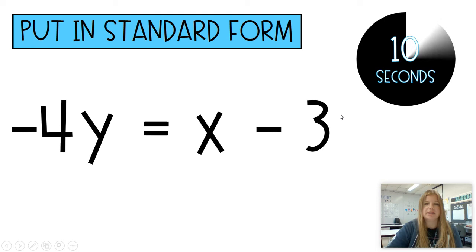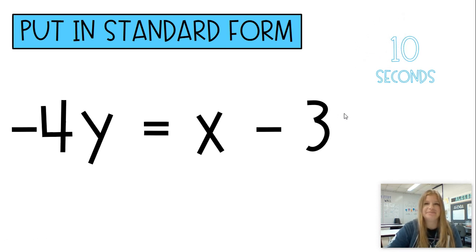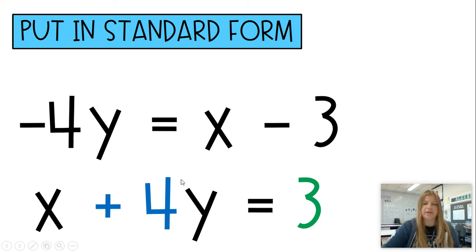Negative 4Y equals X minus 3. This can be done in just one step. Actually, 2. So for this one, you would have possibly added 4Y and then added 3. Or you can go ahead and you could subtract X. Then again, you need to change the sides of the entire equation so that your A value is positive.